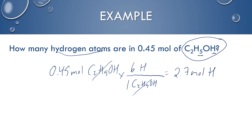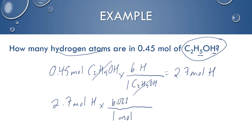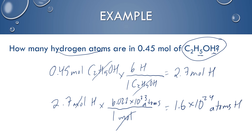But it's not asking us for moles, so I continue with moles of hydrogen. To find the atoms I need to use Avogadro's number: 6.022 times 10 to the 23rd atoms per mole. The moles cancel, and to 2 sig figs I get 1.6 times 10 to the 24th atoms of hydrogen.